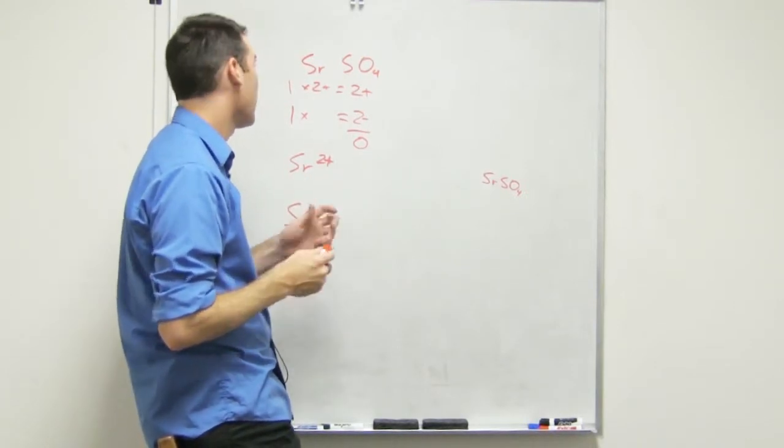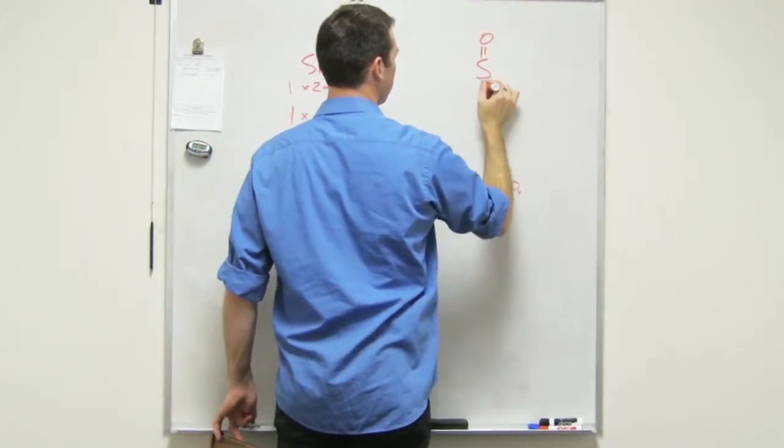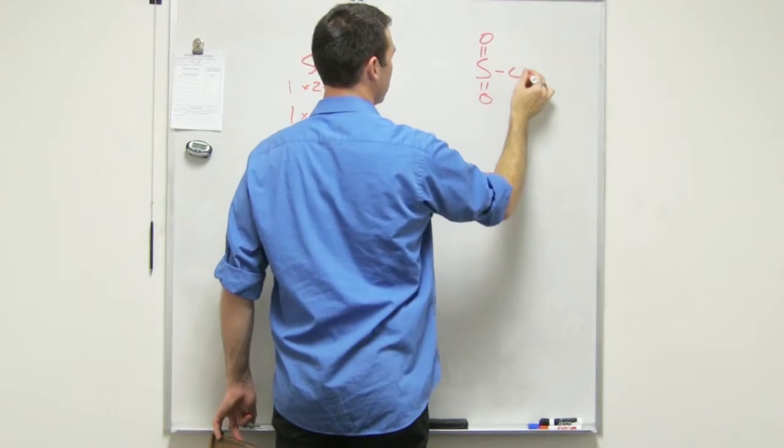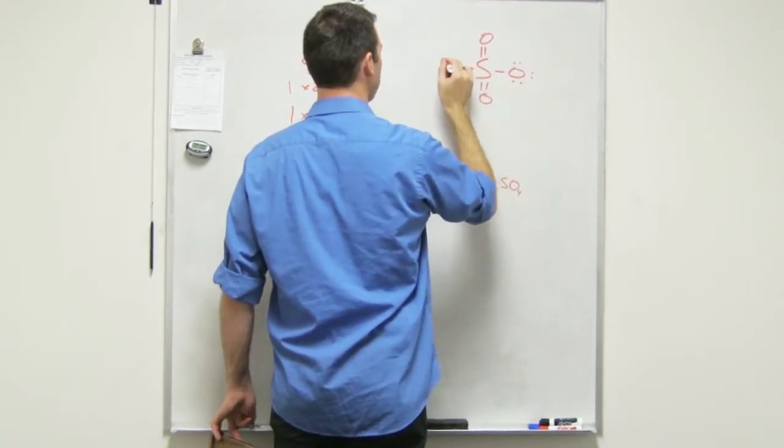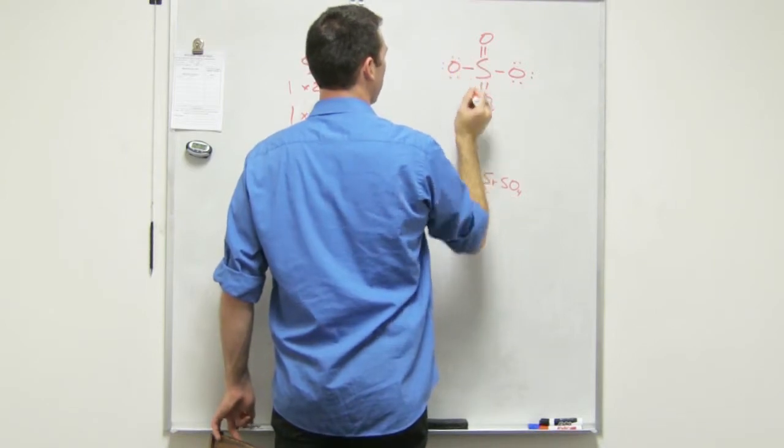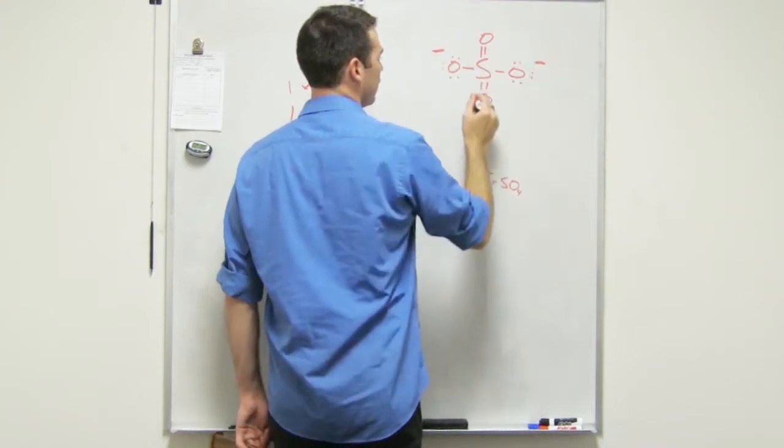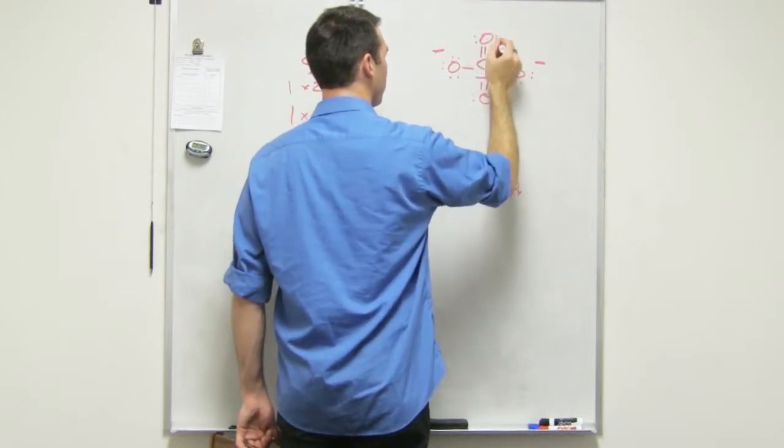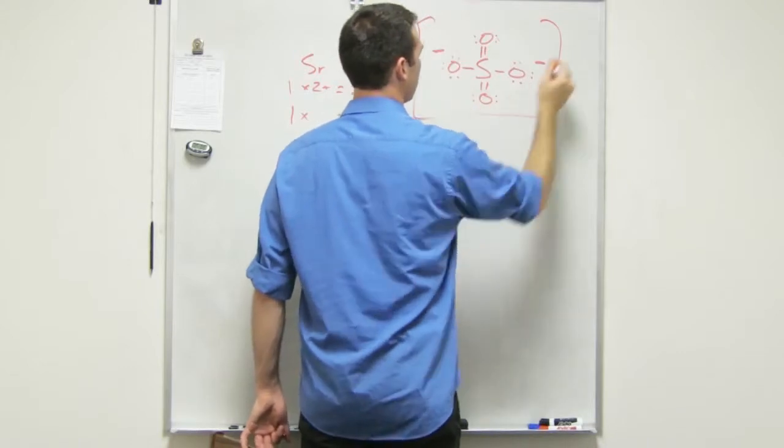Okay, in reality I could draw it like this. This is what it looks like: S double bonded to an O, double bonded to an O, single bonded to an O right there, and single bonded to an O right there. And we have a negative charge right there, negative charge right there. So overall, this thing has a charge of two negative.